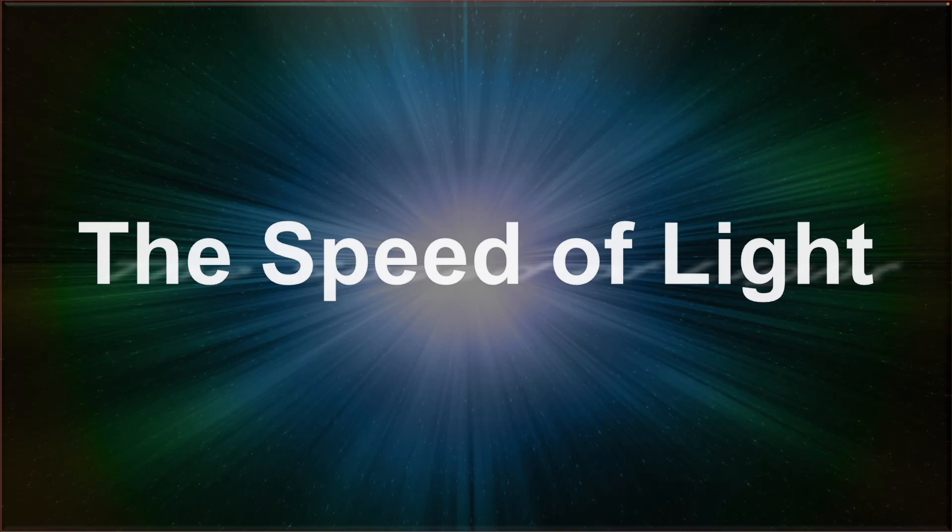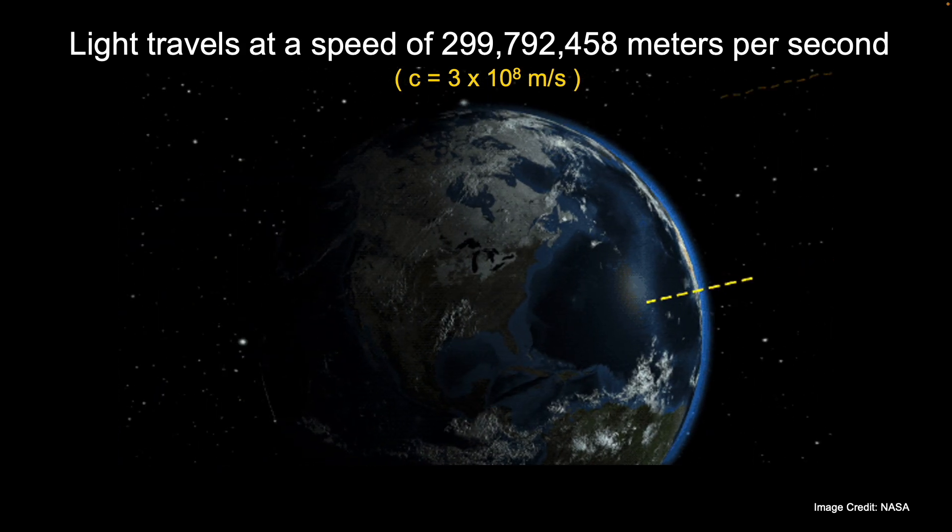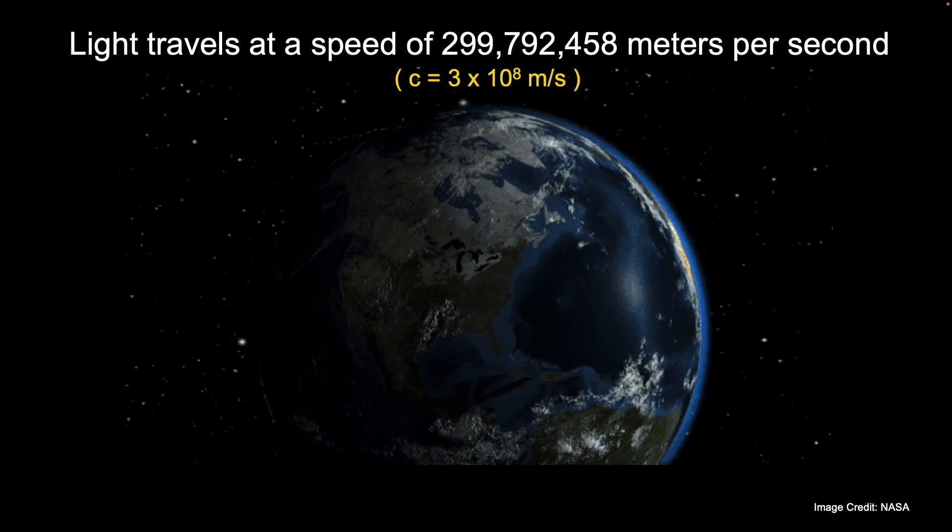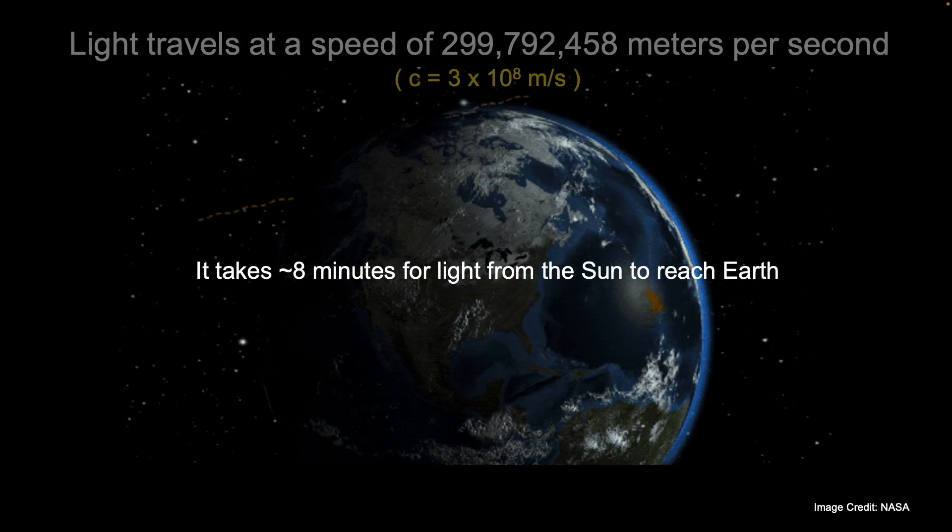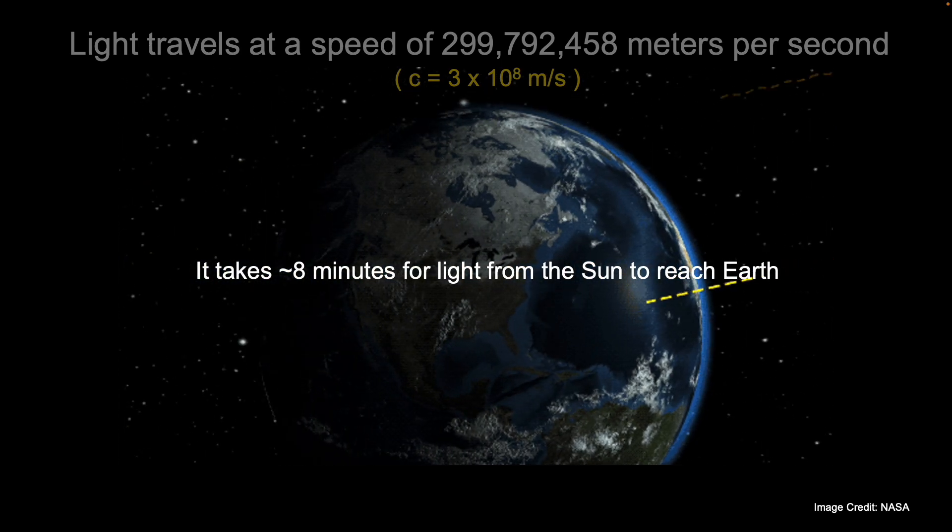The speed of light. Light travels at a speed of nearly 300 million meters per second, and to put that into perspective, it takes a little more than eight minutes for the light from the Sun to reach the Earth.